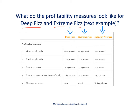The first slide shows the profitability measures, presented in the same order as in a separate video on profitability ratios. We're looking at the gross margin ratio, the profit margin ratio, return on assets, return on common shareholders' equity, and earnings per share. The idea is to see how healthy these two vendors are and whether there is any compelling reason to choose one over the other based on financial ratios.